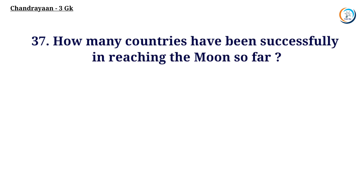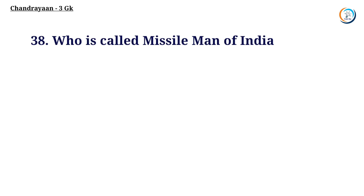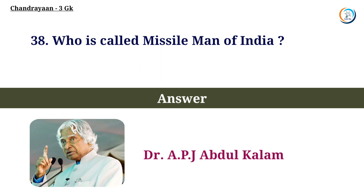How many countries have successfully reached the moon so far? Answer: Three countries. Who is called the Missile Man of India? Answer: Dr. A.P.J. Abdul Kalam.